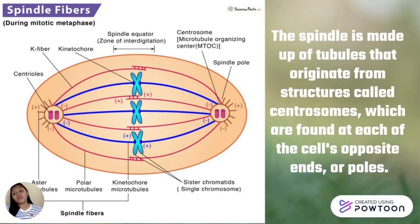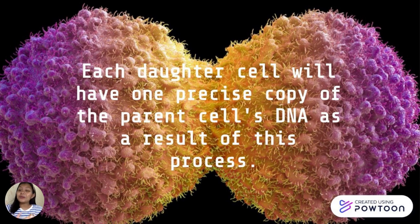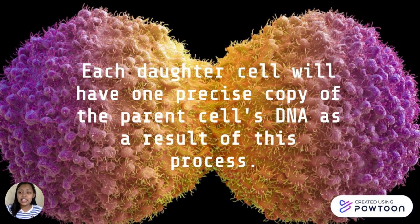The spindle is made up of tubules that originate from structures called centrosomes, which are found at each of the cell's opposite ends or poles. It usually shortens and migrates toward the cell poles. Mitosis is primarily responsible for cell growth and replacement. However, mistakes produced during mitosis can cause alterations in the DNA, which can lead to hereditary illness if not rectified.